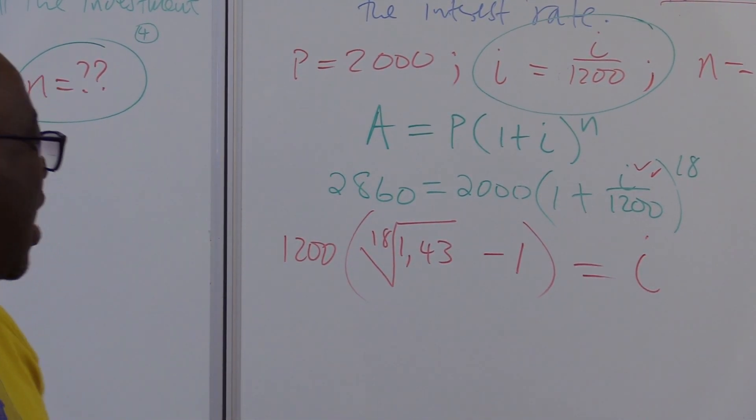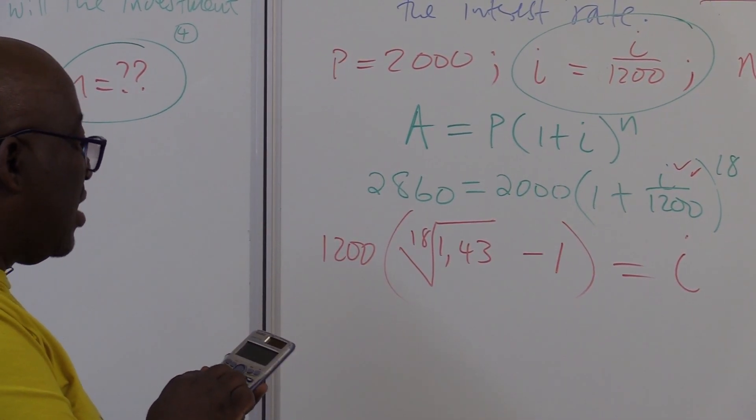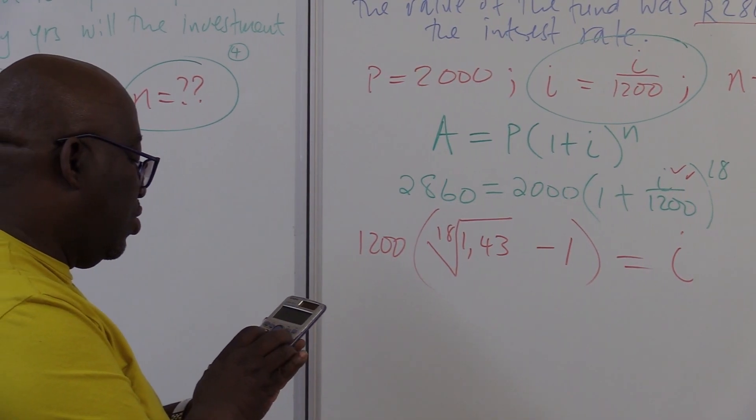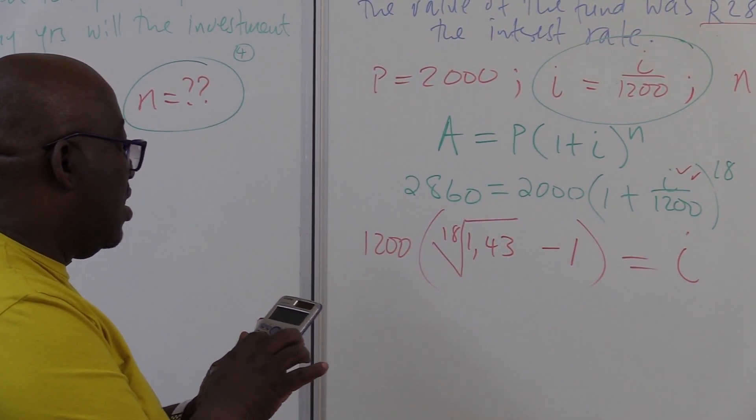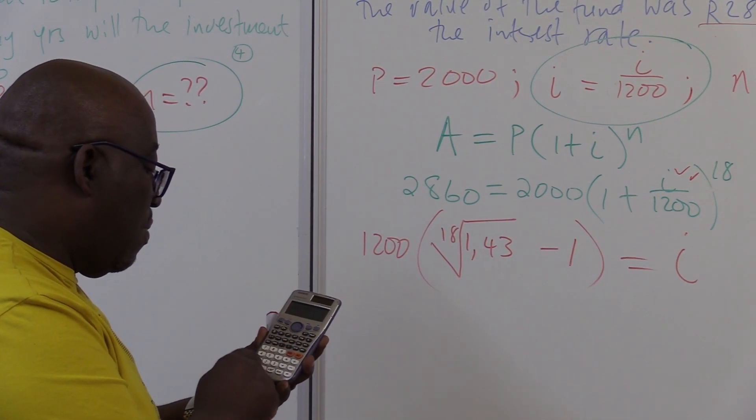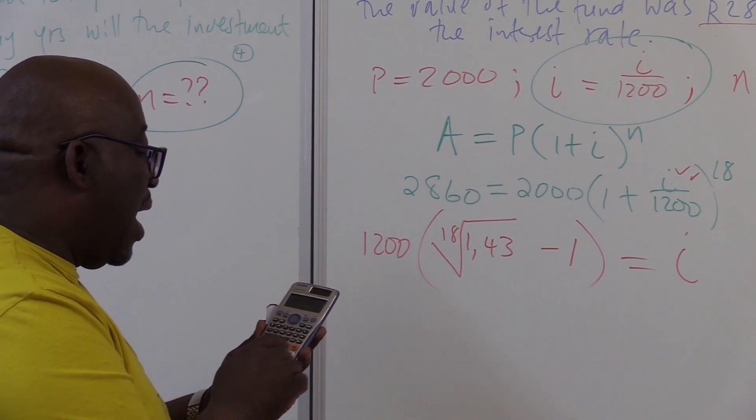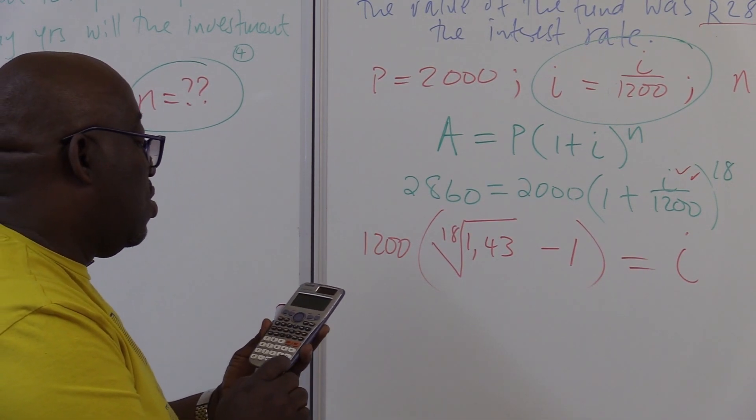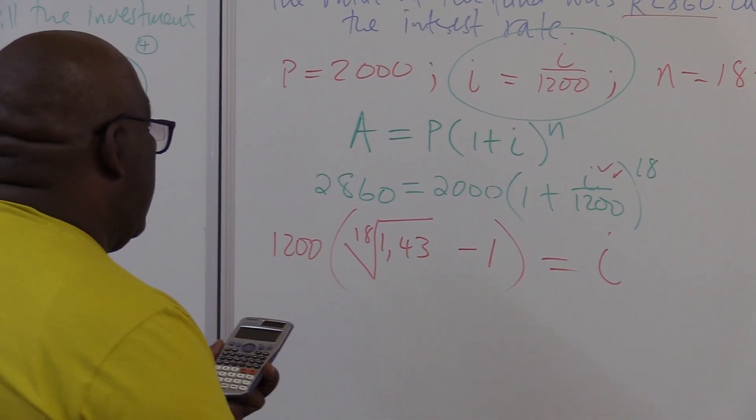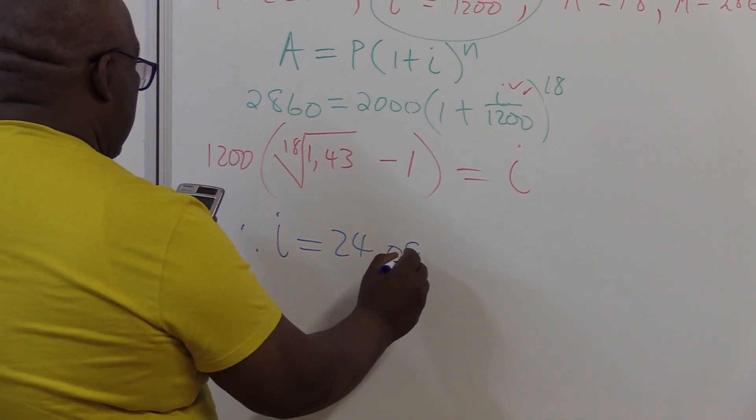Then I go to my calculator and check what I have. This is 1200 into, put my bracket. I've got it on my calculator, there I've got 18, then I go inside. What do I have? 1.43. Then I go out and I subtract minus 1, I close my bracket, I say equals to. This is what we're getting as our solution at the end. My I equals 24.08%.